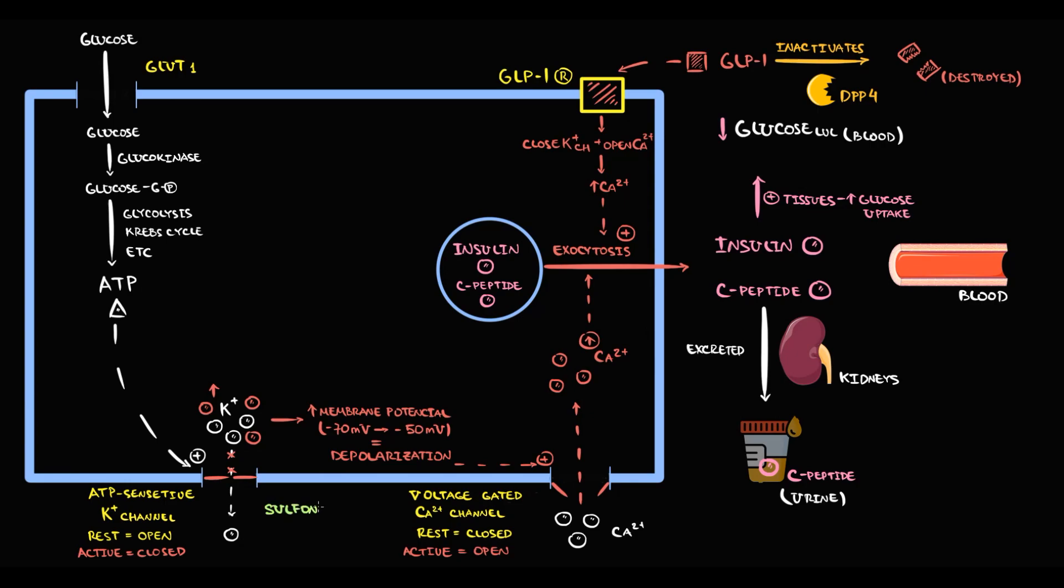If we prescribe sulfonylureas, they provide blockage of potassium channels. With additional blockage of potassium channels, more potassium ions will remain inside the beta cell. The higher the amount of intracellular potassium ions, the higher becomes membrane potential. And thereby, the stronger will be the depolarization of beta cells.